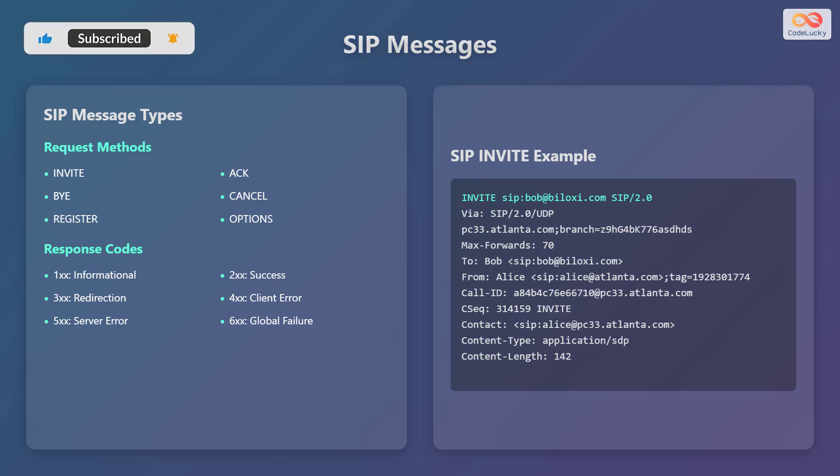Here is an example of a SIP Invite message. It includes details like the destination address, Via headers for routing, Max-Forwards to prevent loops, To and From addresses, a Call-ID for unique identification, a CSeq for sequencing, contact information, content type, and content length.